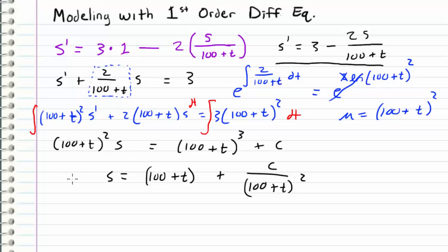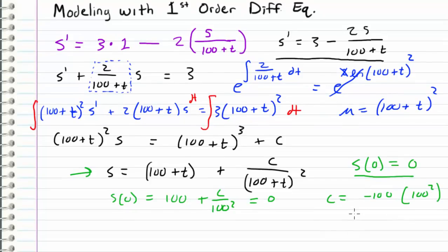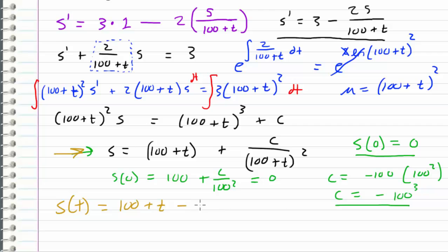This is the general solution. Recalling our initial condition — salt at time zero equals zero since the tank was all fresh water — we plug in t equals 0: 0 equals 100 plus C divided by 100 squared. Setting this equal to zero and solving for C gives C equals negative 100 cubed. Substituting back, the final solution is s(t) equals (100 + t) minus 100³ divided by (100 + t)².